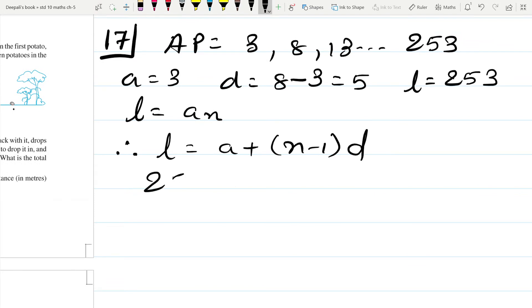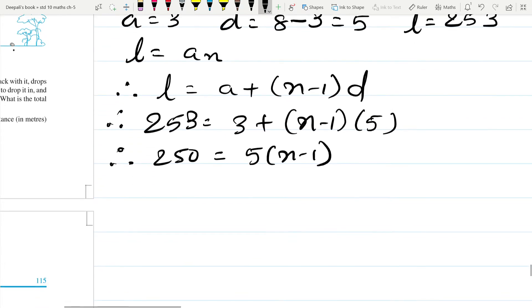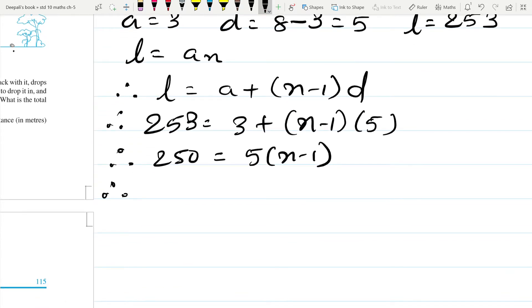Therefore 253 is equal to 3 plus N minus 1 into 5. Therefore 250 is equal to 5N minus 5, so we get N minus 1 is equal to 50.